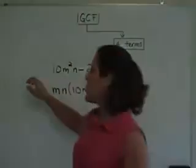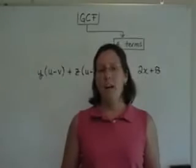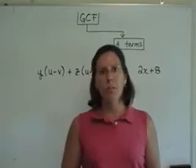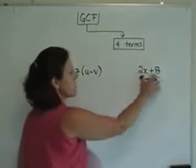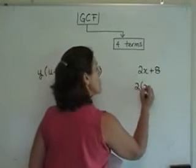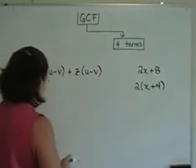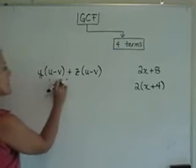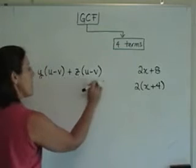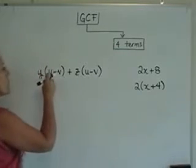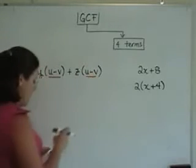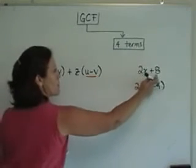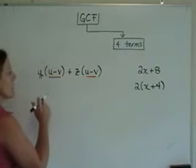Let's look at the intermediate step where we take the greatest common factor out of two terms. Like in the problem 2x plus 8, where I would factor out the 2 first and be left in the parentheses with x plus 4 — I'd like you to notice that in this problem, think of this expression as one term and the second that follows the plus sign as another term. Would you notice that this u minus v is common to each of these terms? Like those two terms that have a common factor of 2, I'm going to factor this u minus v out of each of these terms.